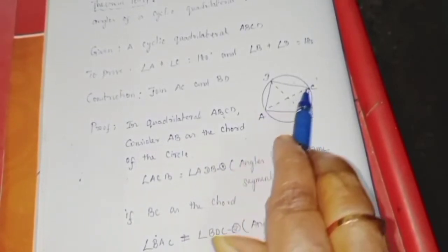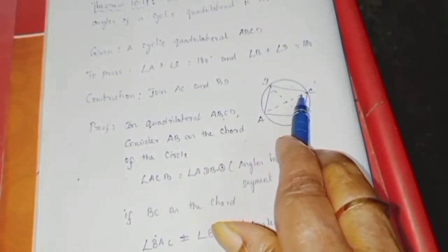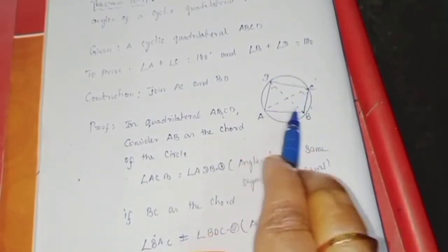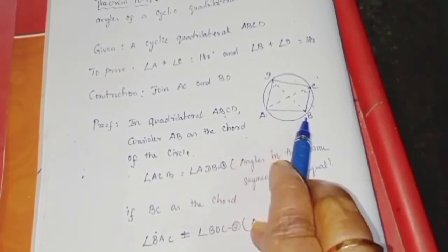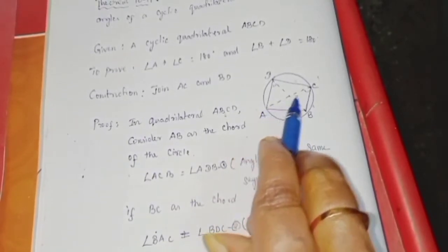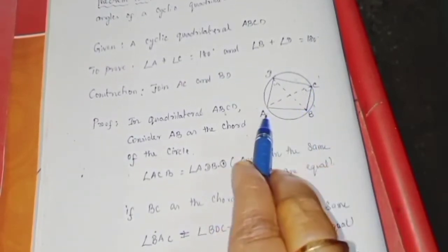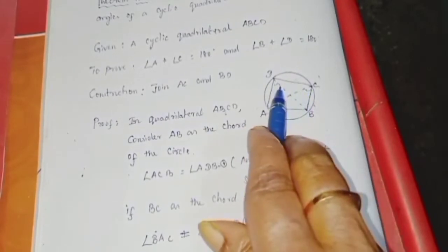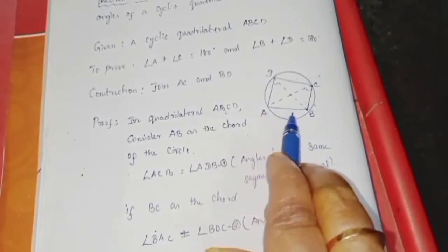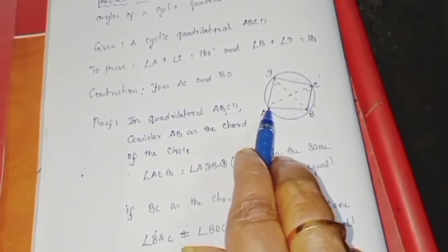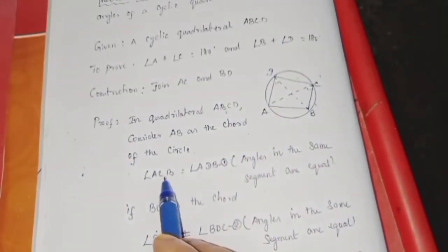First, consider arc AB and angle ADB. Angle ACB is equal to angle ADB — these are angles in the same segment. This gives us the first equation.